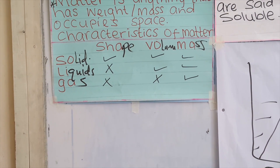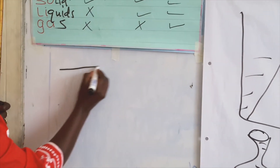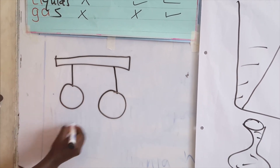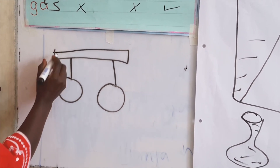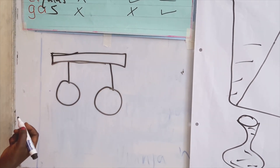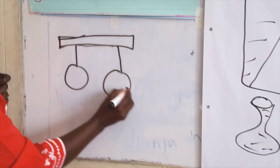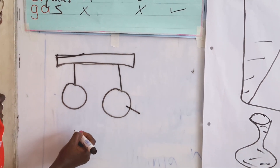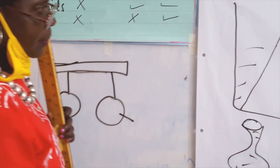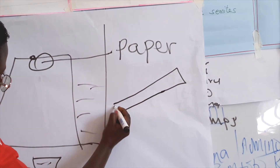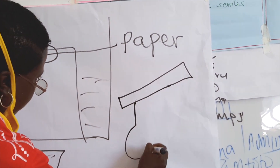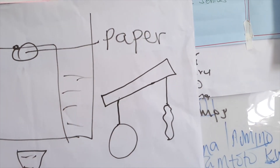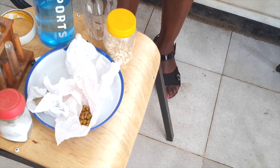For instance, if you take a balloon with some air in it and suspend it on a balance, then if you deflate one balloon, the deflated one will hang lower. This shows that air has mass.